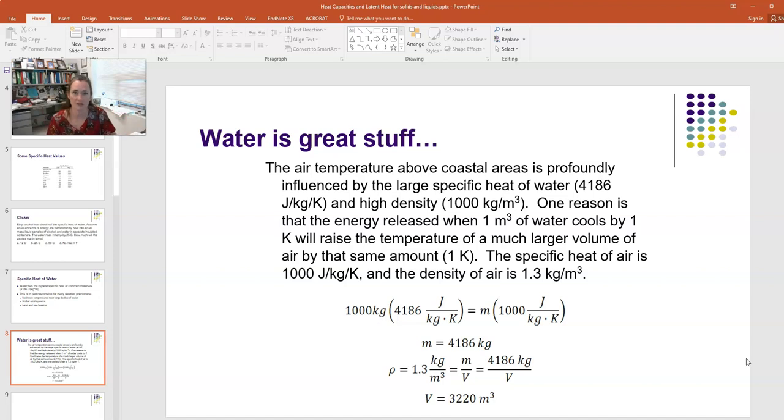Putting water on the left-hand side: one cubic meter of water is 1000 kilograms. The specific heat of water is 4186 joules per kilogram per Kelvin. Now the air on the right-hand side: the specific heat of air is about 1000 joules per kilogram per Kelvin, and the density of air is about 1.3 kilograms per meter cubed. These are ballpark figures. On the right-hand side, we have M, the mass of air we're solving for, times the specific heat, 1000 joules per kilogram per Kelvin, set equal to the water on the left.